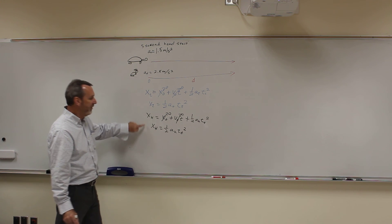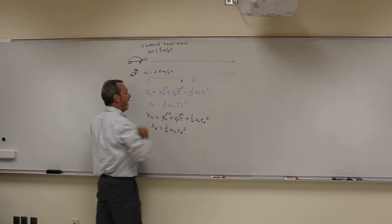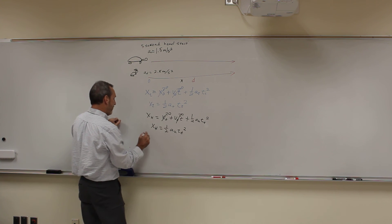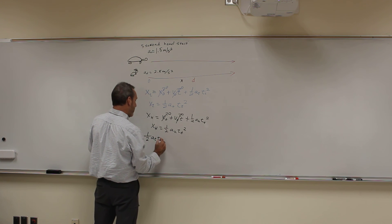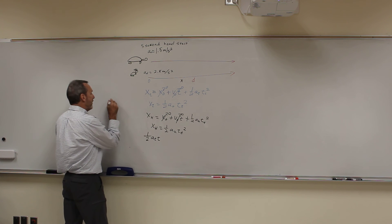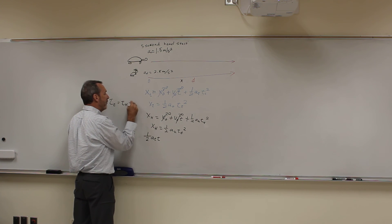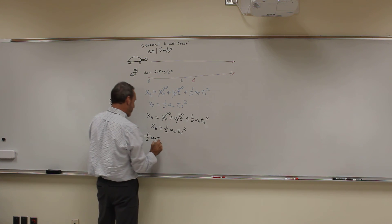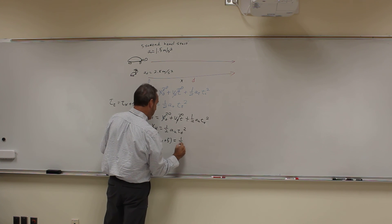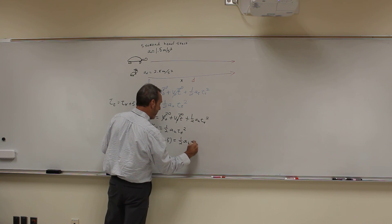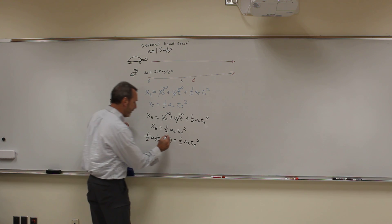I can set those equal to each other because they both go the same distance. So: 1 half a-tortoise times the tortoise's time squared equals 1 half a-hare times the hare's time squared. The tortoise's time is equal to the time of the hare plus 5 seconds — it's just 5 seconds more. So I substitute: 1 half a-tortoise times (t-hare plus 5) squared equals 1 half a-hare times t-hare squared.